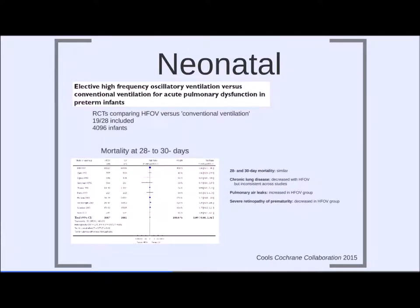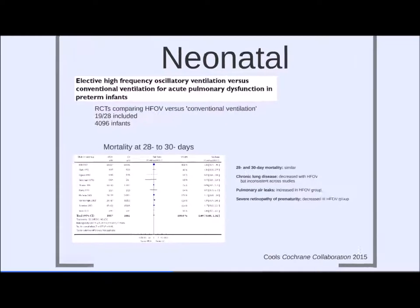The neonatal population is where we see the oscillator used most frequently. There are many small trials but no large RCT. A well-conducted Cochrane review analyzed 28 studies, 19 of which were included, totaling over 4,000 infants. Mortality at 28–30 days was essentially the same comparing oscillator versus conventional ventilation, with no significant difference (confidence interval 0.88–1.34).